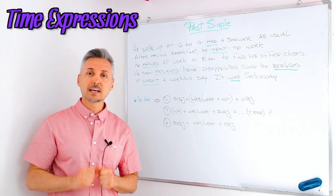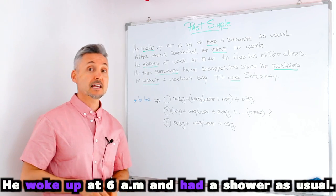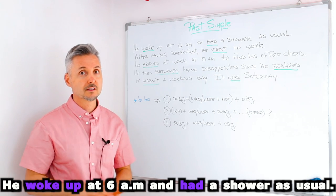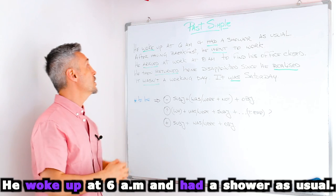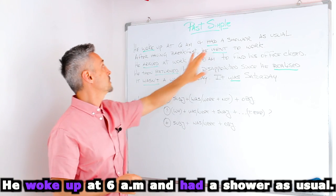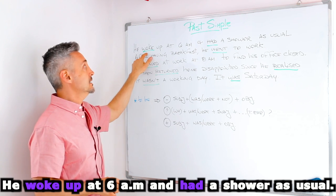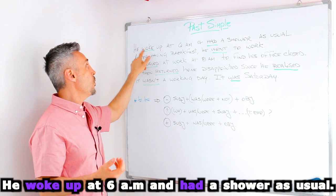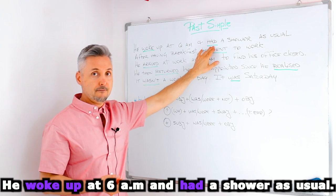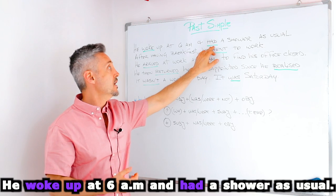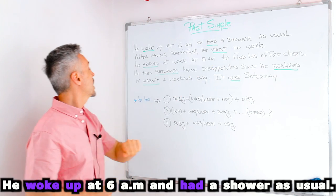So let's look at my little story now. I woke up at 6 a.m. and had a shower as usual. So in this sentence we have two past tense. So to wake up is irregular. So woke up. Then have. The past of the verb to have is had. So irregular.